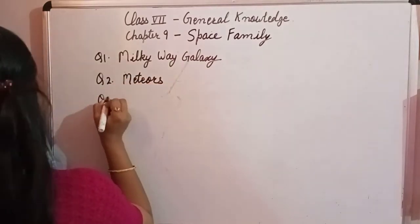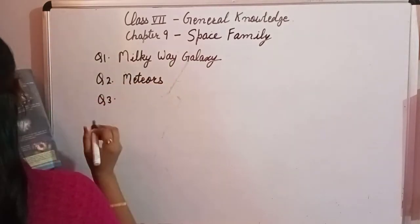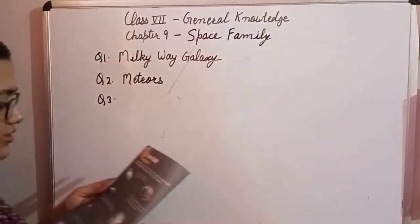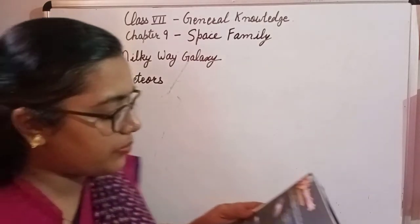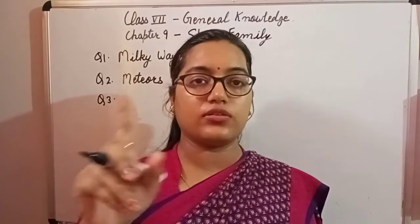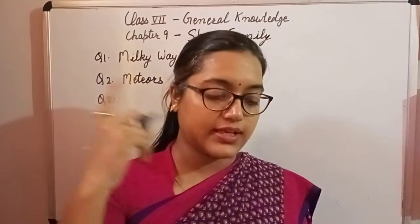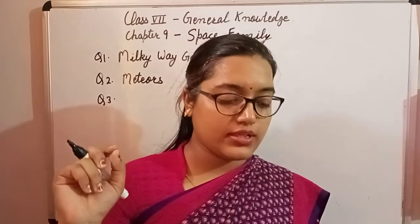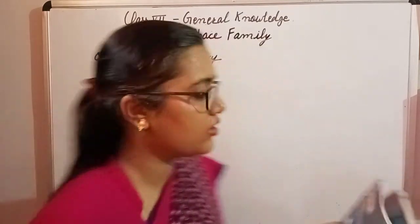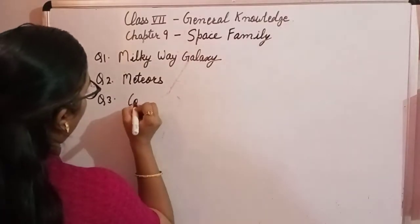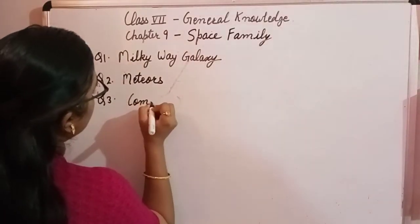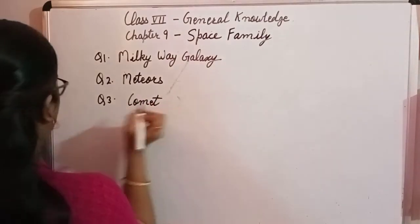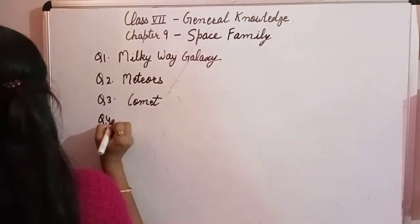Question number three: it is a luminous — luminous means shiny — celestial body that goes around the sun, usually with a long shining tail. That is a comet. So a comet is a luminous celestial body that orbits the sun with a long shining tail.